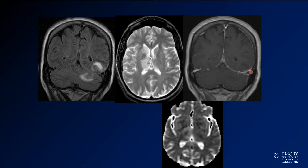What this triangular abnormality that we're seeing here represents is non-filling of the transverse sinus right at the transverse-sigmoid junction. That's probably a thrombus in the transverse-sigmoid junction there.